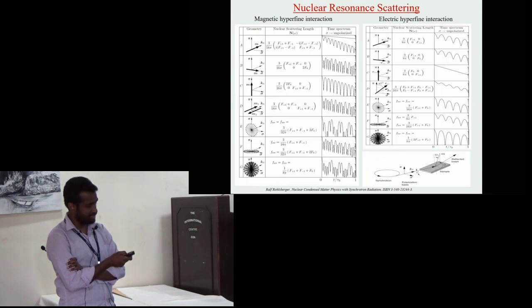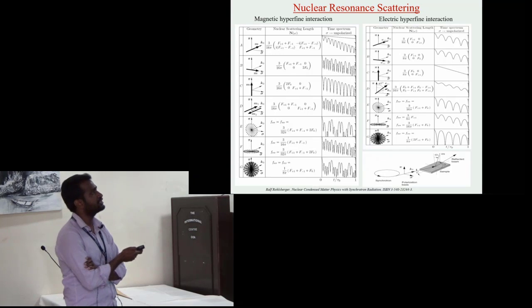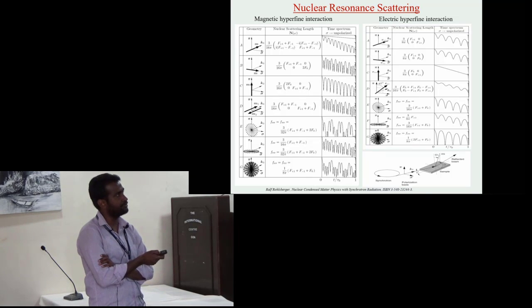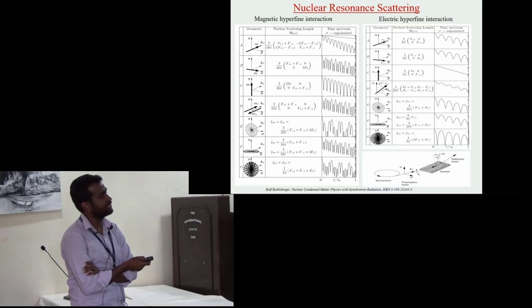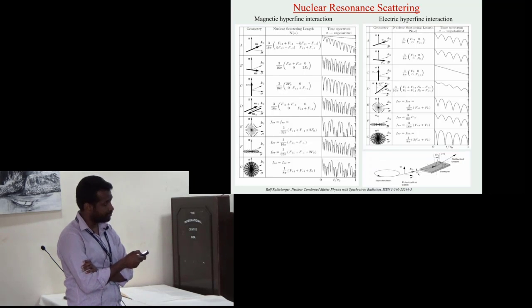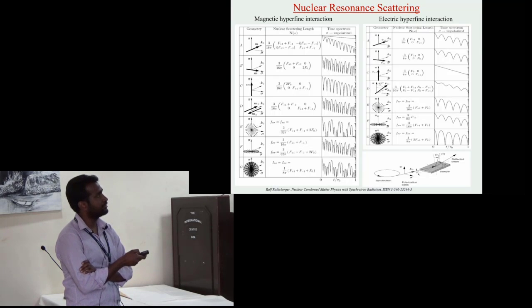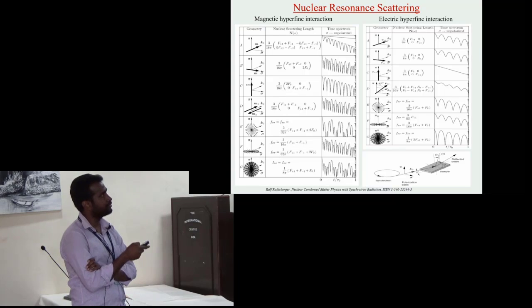This spectra in this technique also depends on relative orientation of internal field. If the sample has pure electric hyperfine interaction then depending on relative orientation the spectrum will change like this. In case of pure magnetic hyperfine interaction depending on relative orientation the magnetic spectra will change like this.